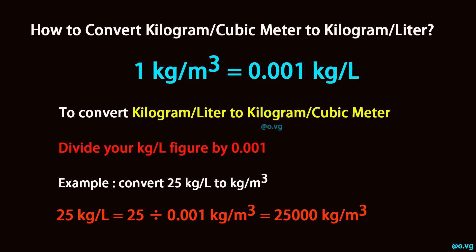To convert kg per liter to kg per cubic meter, divide your kg per liter figure by 0.001. Example: convert 25 kg per liter to kg per cubic meter. 25 kg per liter equals 25 divided by 0.001, which equals 25,000 kg per cubic meter.